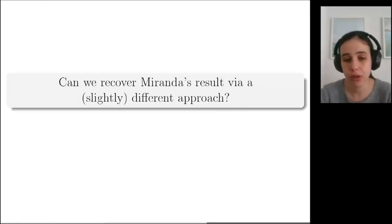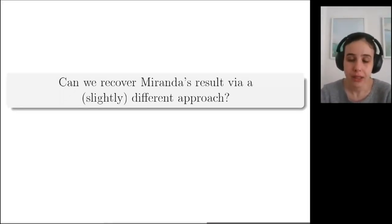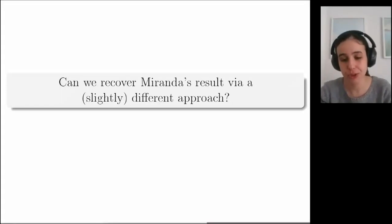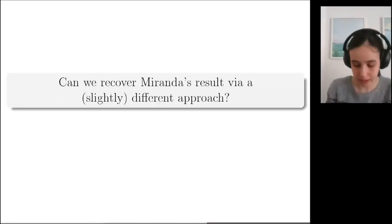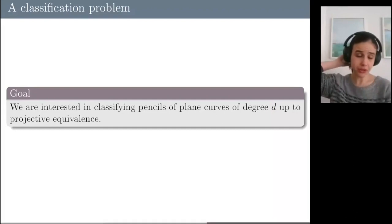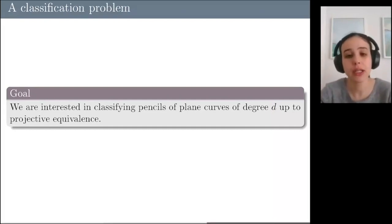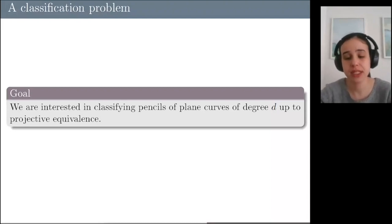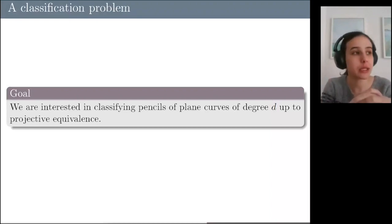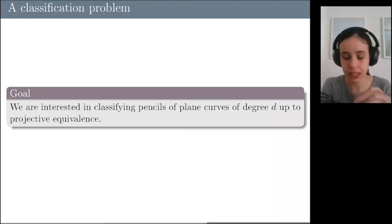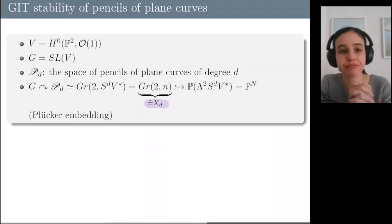Here is the motivating question I have for today's talk: I would like to reprove Miranda's result using a slightly different approach, and for the rest of the talk I will explain how one can do that. What I'm interested in is looking more generally at the problem of classifying pencils of plane curves of any fixed degree d up to projective equivalence, and rephrasing this as a problem of constructing some quotient using the machinery of geometric invariant theory.